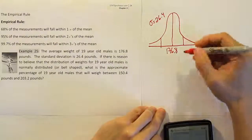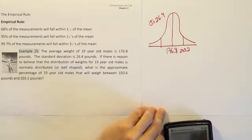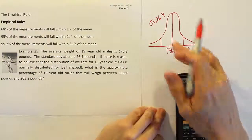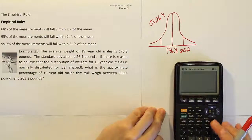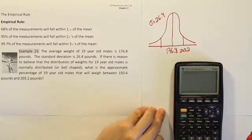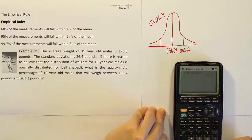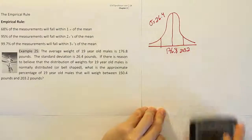Well, that's exactly the number at the top of the interval they gave us, 203.2. If I do the same thing on the other side, this time taking away, right? So I'll do 176.8, and I will subtract off 26.4. And when I do that, I get 150.4.